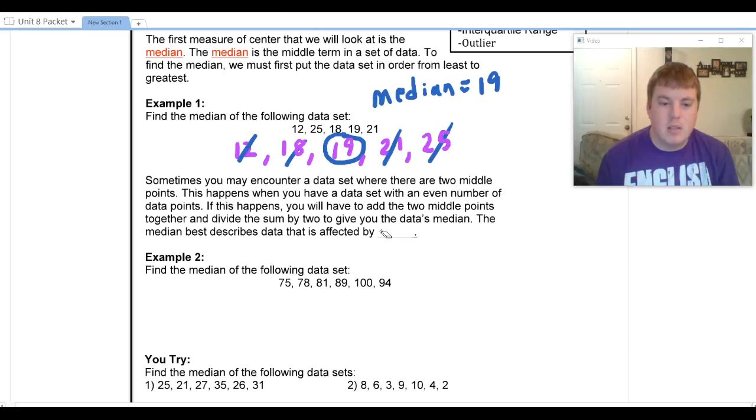And the median is going to best describe data that is affected by outliers. Outliers are going to tend to pull some of our other measures of center further one way or the other. The median, since it's a middle number, if we just have one extra number at the top or one extra number at the bottom, it's not going to be swayed quite as easily as things like the mean or the mode might be.